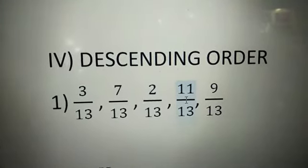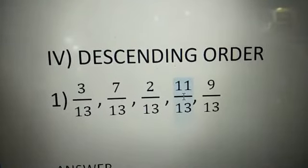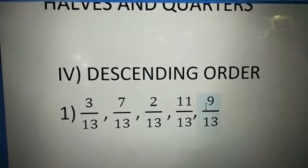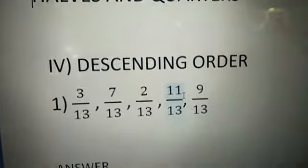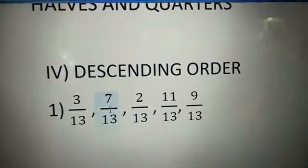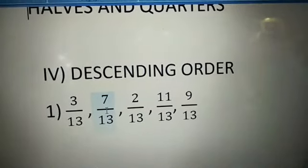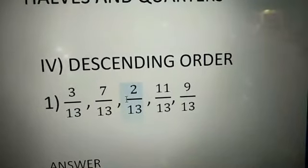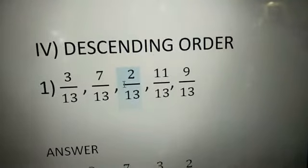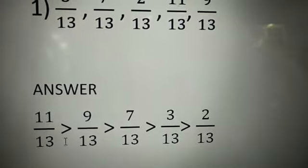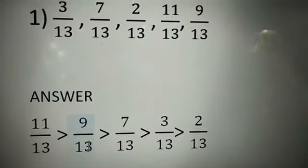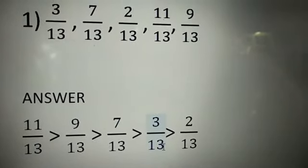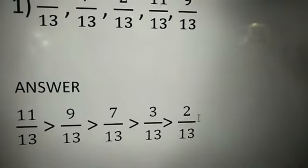So the first fraction is 11 divided by 13. Then search the second one — the second greatest number is 9, so 9 divided by 13 comes next. The next greater number is 7, so 7 divided by 13. Then 3 divided by 13, and finally the remaining one, 2 divided by 13. So our answer is: 11/13 > 9/13 > 7/13 > 3/13 > 2/13. This is our descending order.